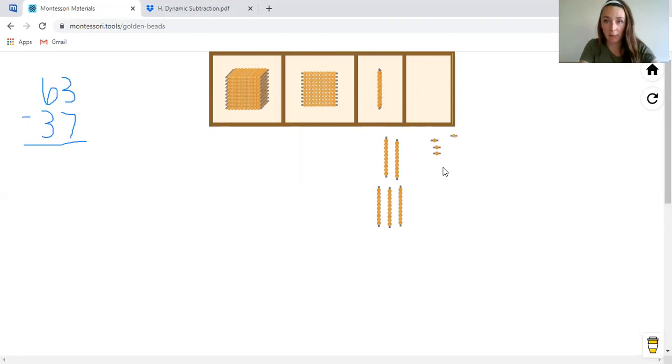And then we're going to add it here. So we took a 10 bar away and we're going to add, that means we're going to add 10 unit beads. So that's one, two, three, four, five, six, seven, eight, nine, 10.